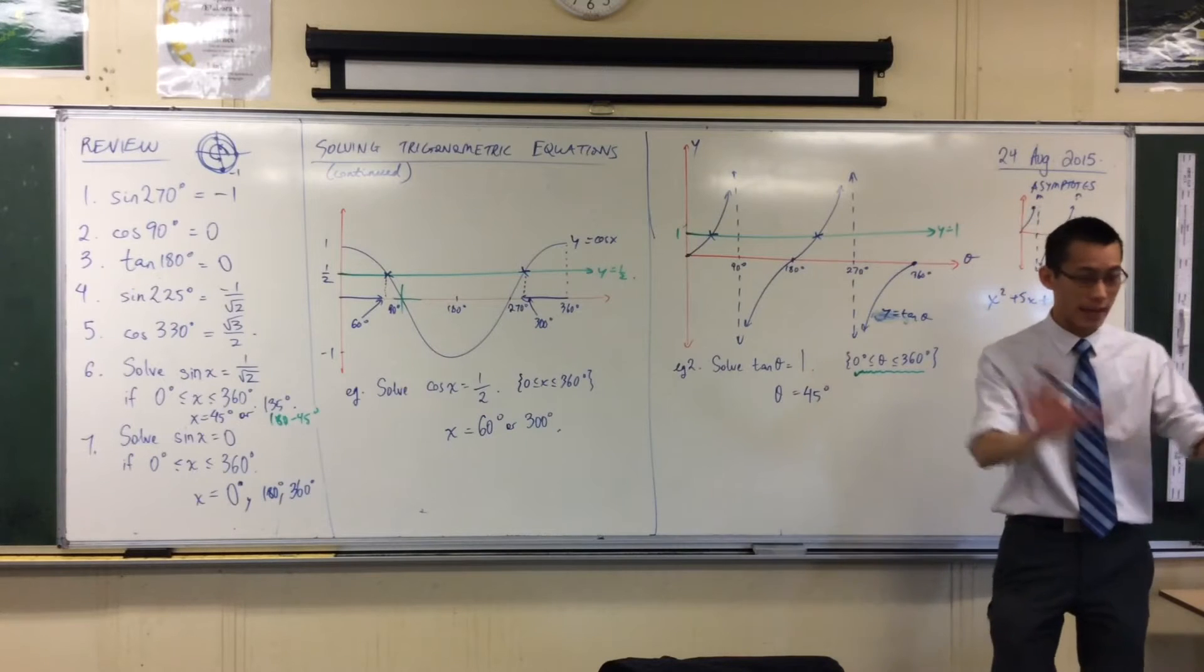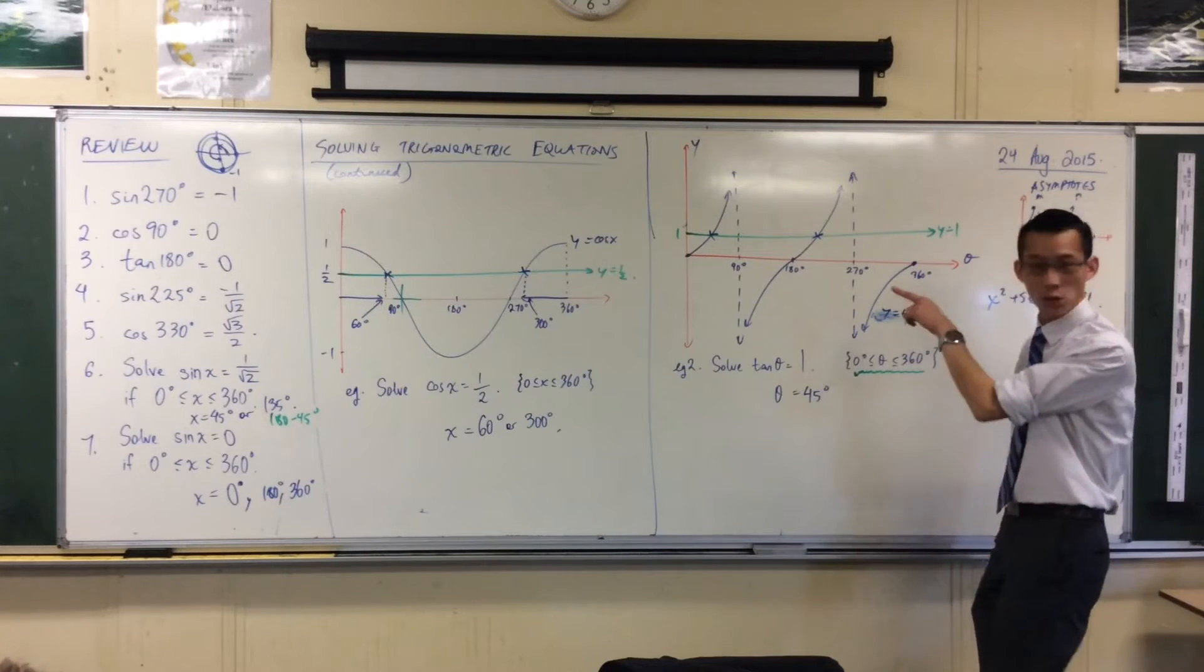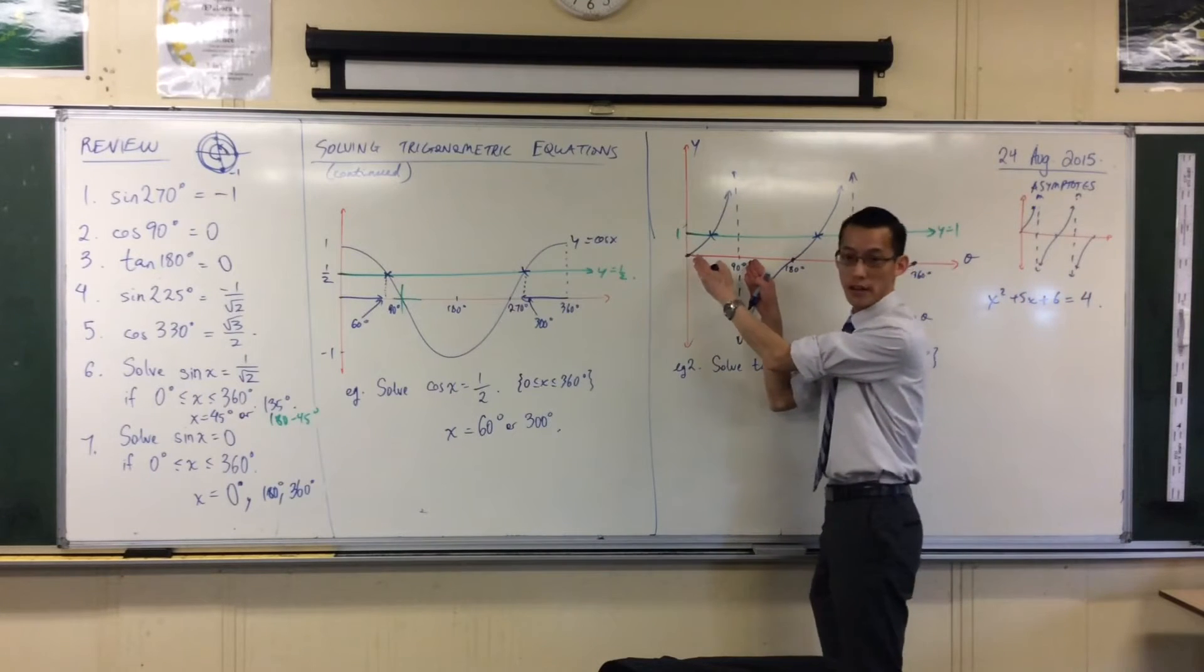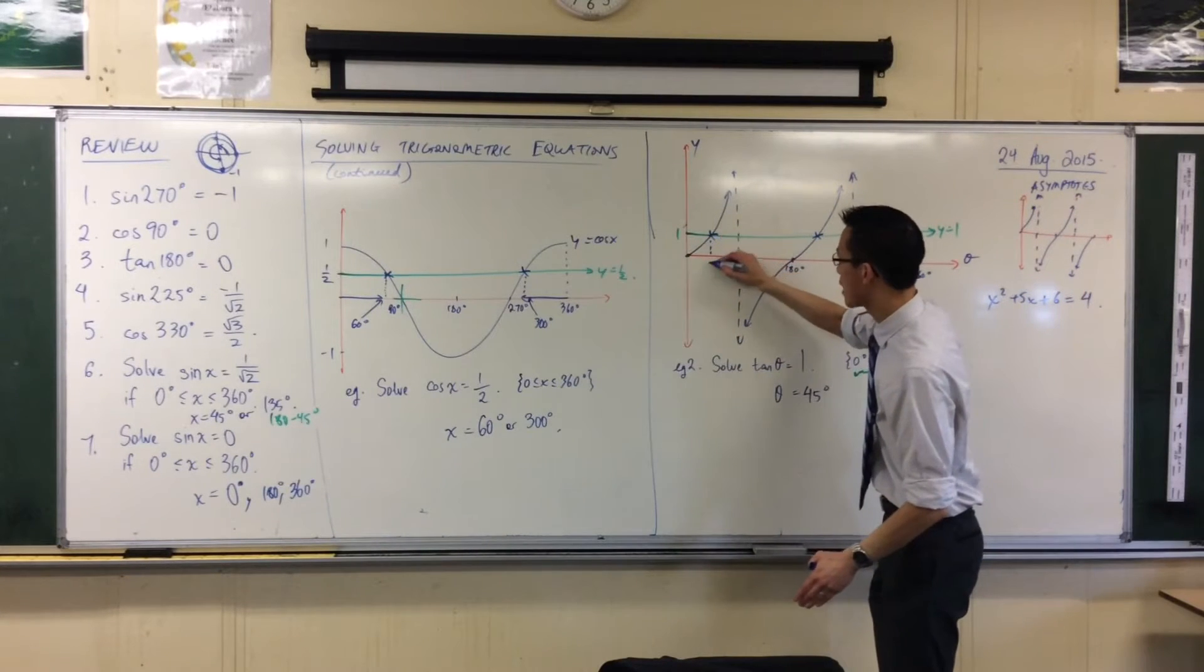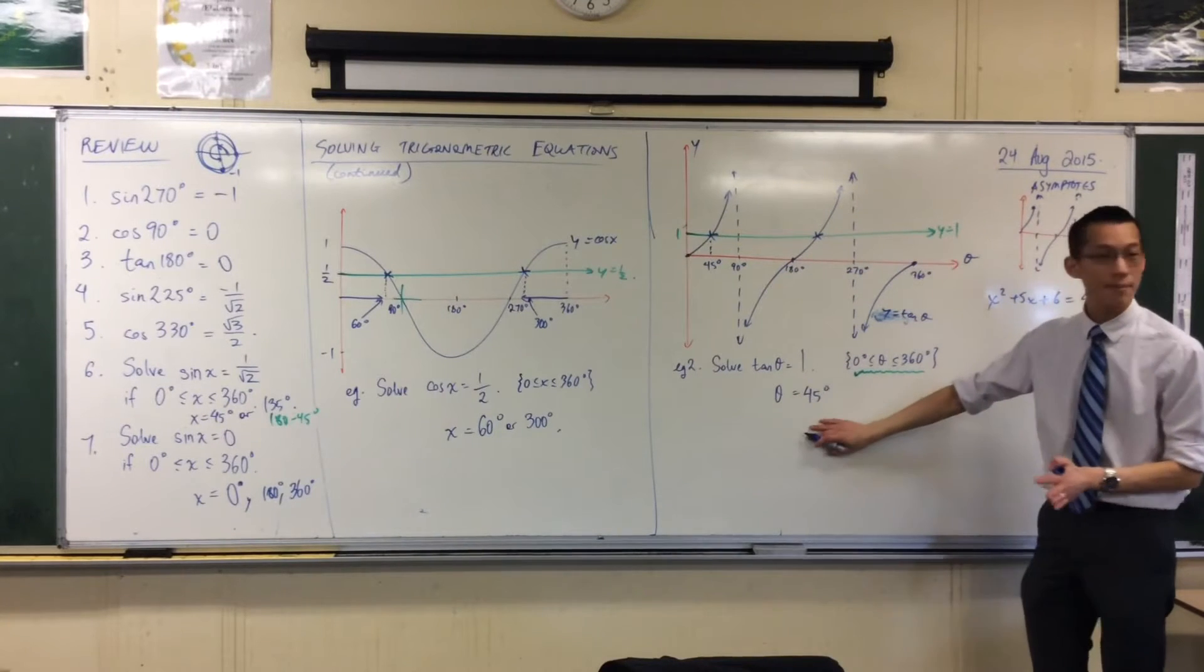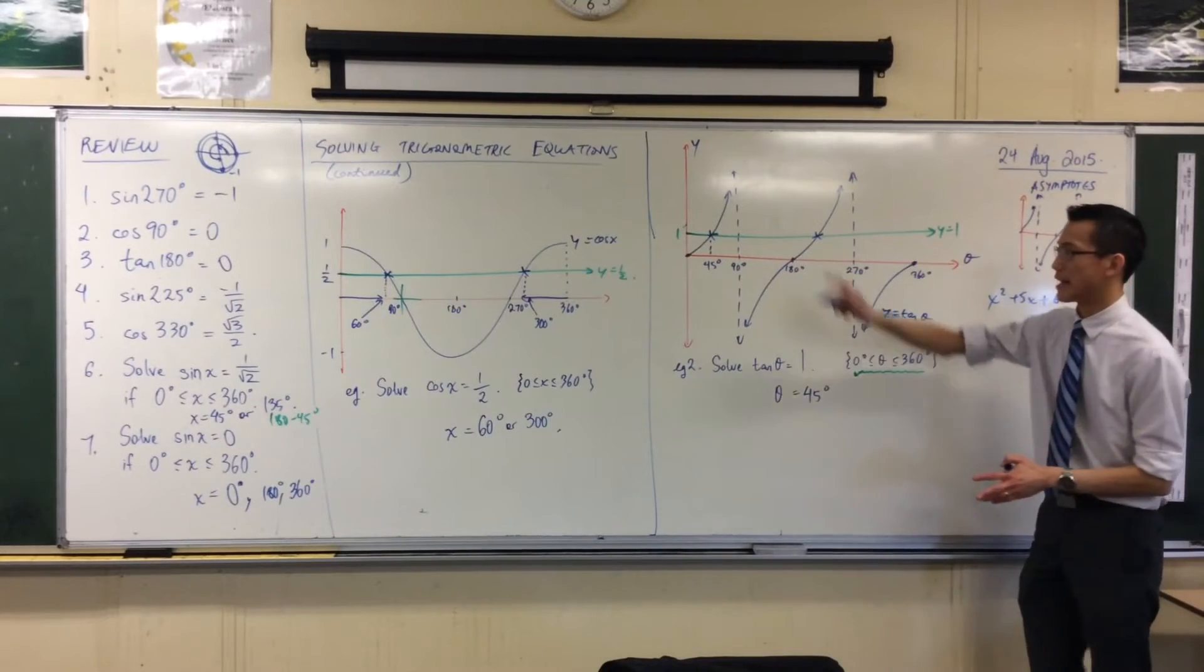Now just pause again. We always do this. Does it look about right on your graph? You're expecting something between naught and 90. See that? 45, it looks about right. So great, I have my first answer, but that's only one of them.